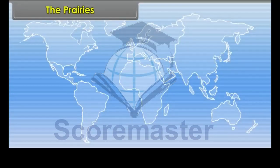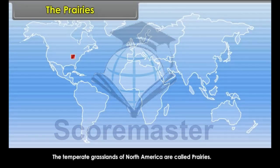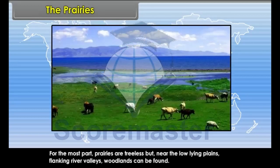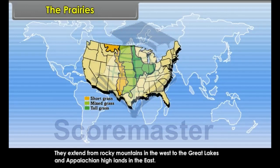The Temperate Grasslands of North America are called Prairies. For the most part, Prairies are treeless. But near the low-lying plains flanking river valleys, woodlands can be found. They extend from the Rocky Mountains in the west to the Great Lakes and Appalachian Highlands in the east.